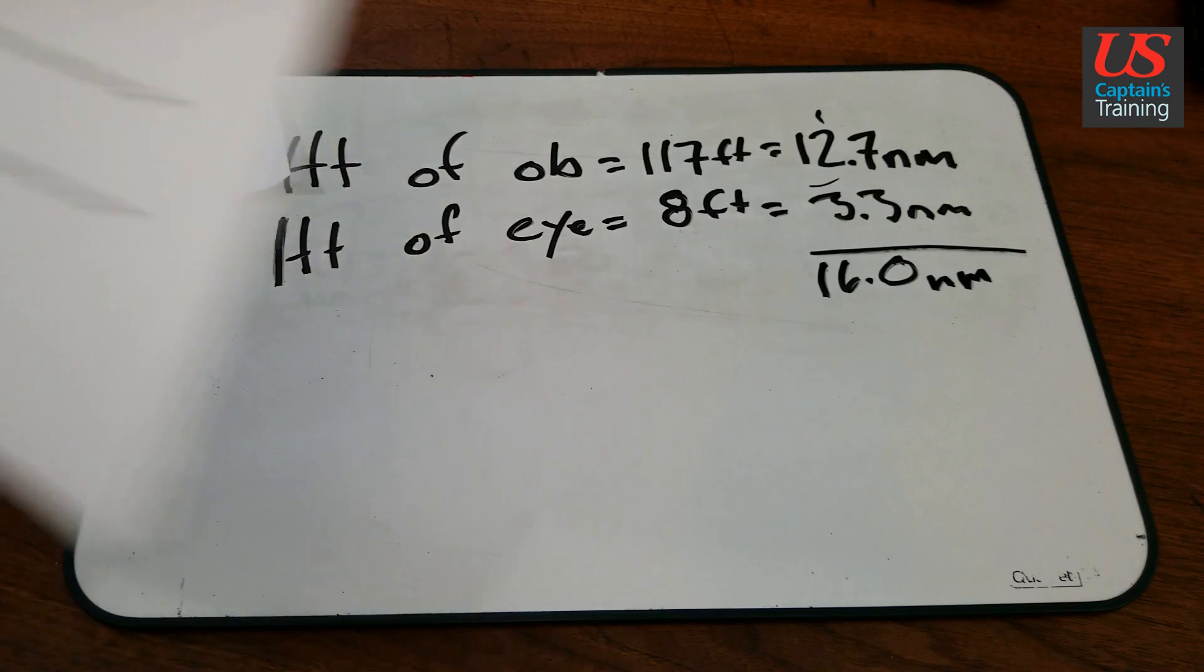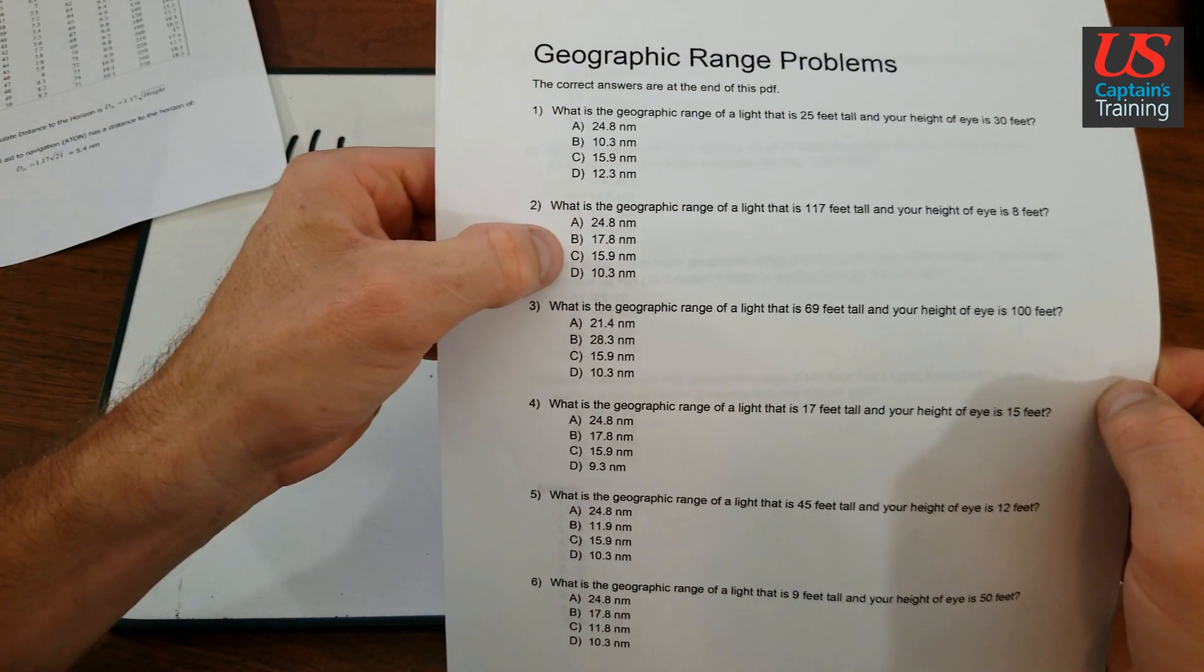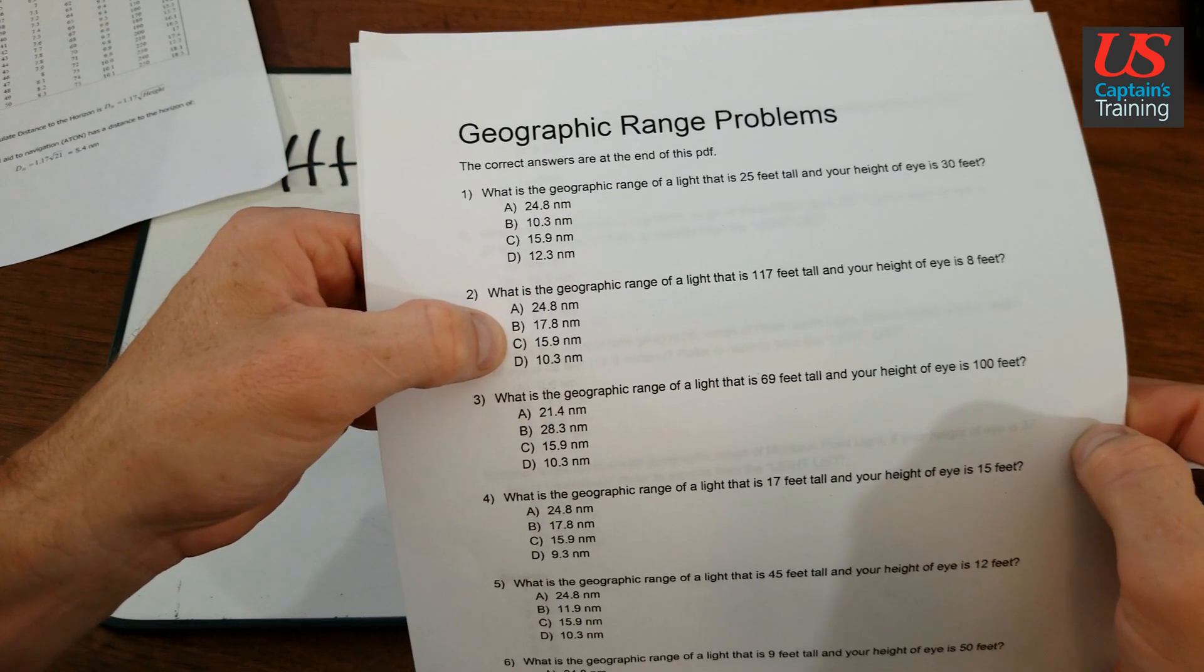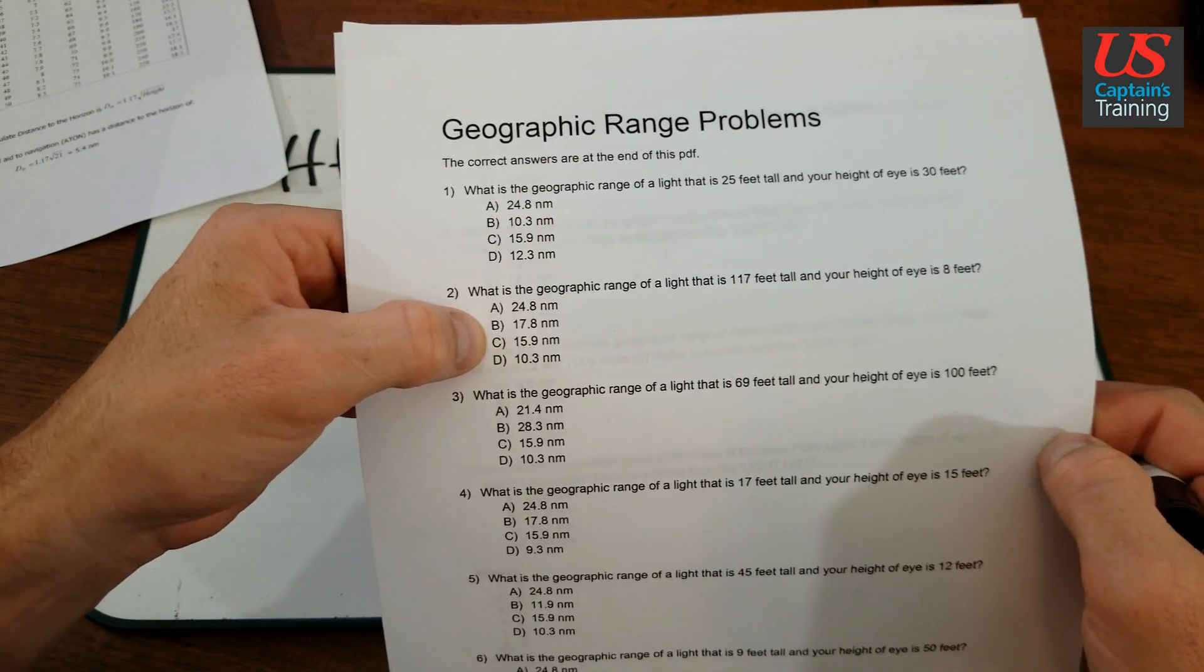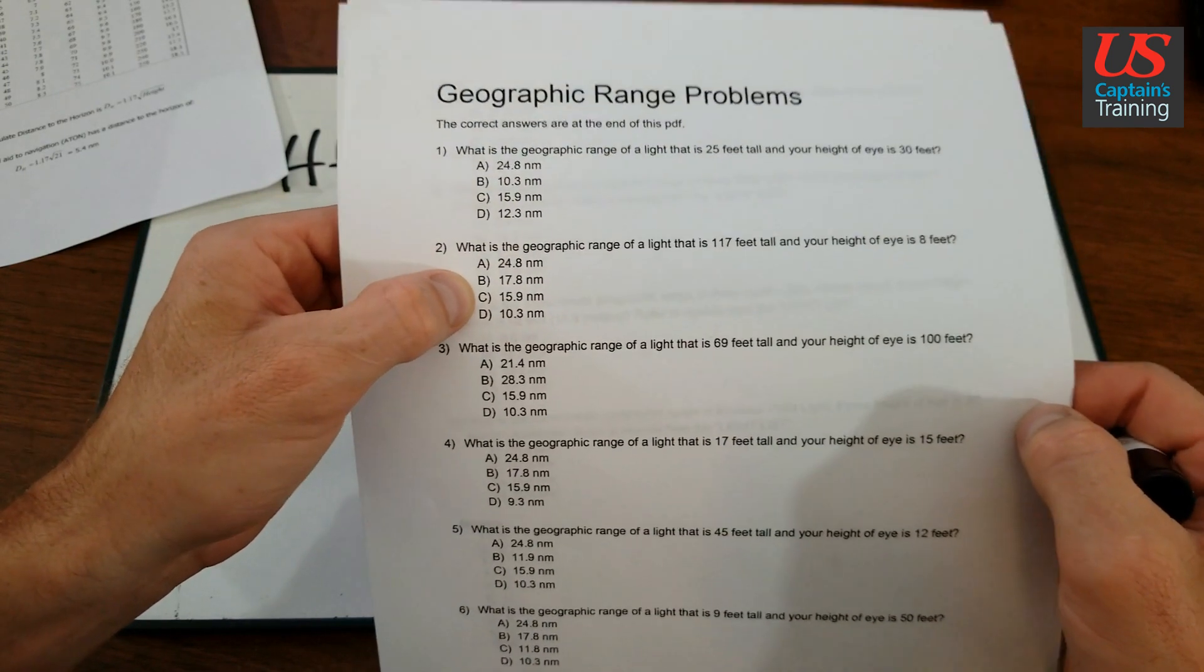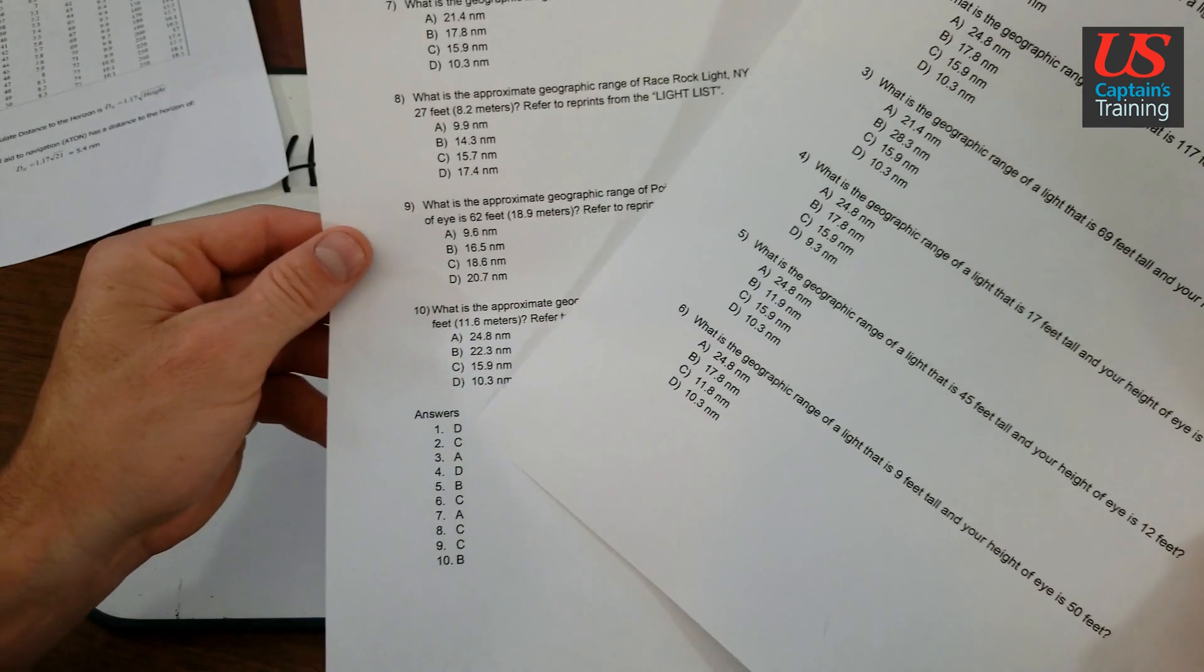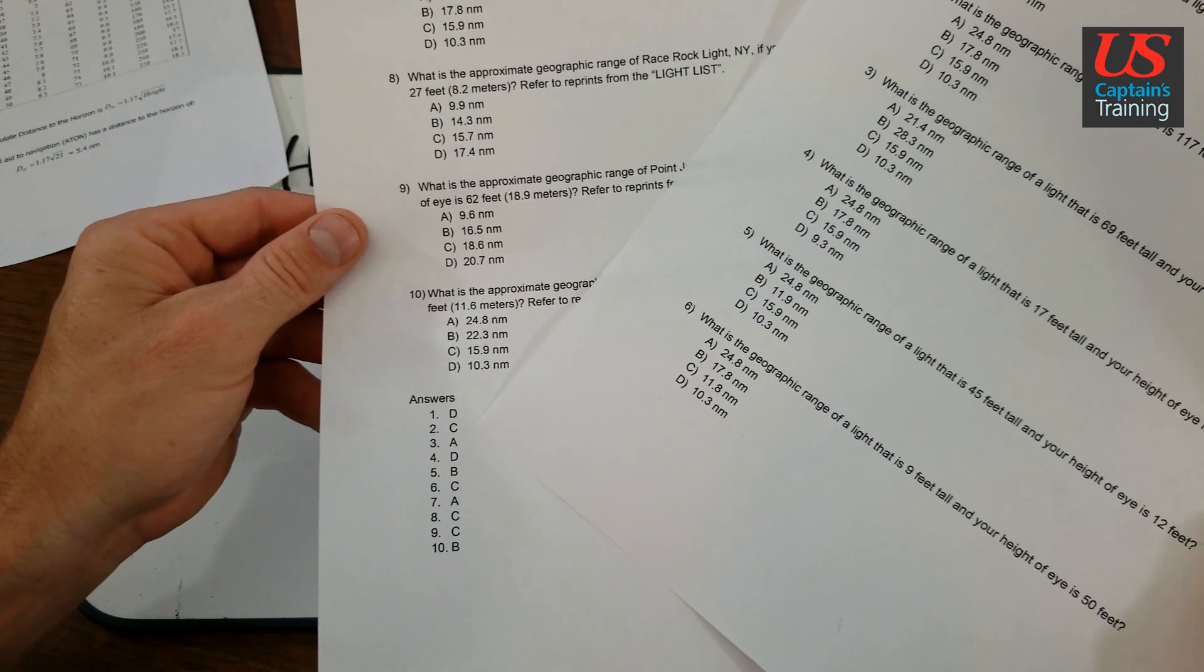Now let's check out our answer. This is number 2. We got 15.9 nautical miles. That's really close. I would go with that because everything else is off quite a bit. So 2 is C, 15.9 nautical miles. Good.